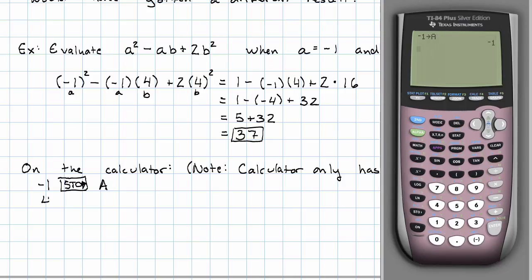Number 4, hit the store key and then letter B. 4 store, here's the key with the letter B above it, so alpha B. That puts the number 4 in the letter B.